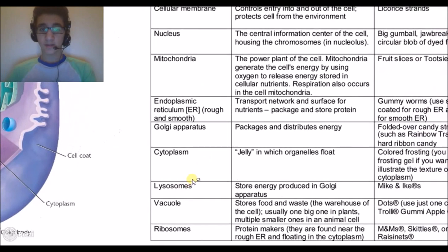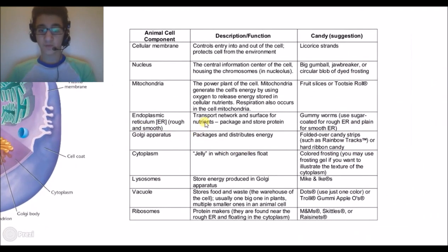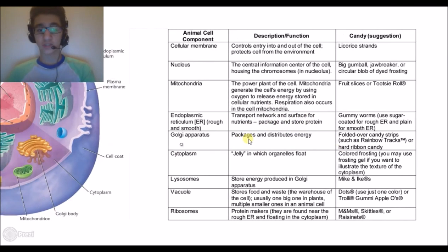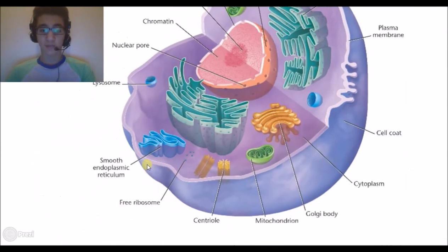The endoplasmic reticulum, the smooth and the rough, is a transport network and surface for nutrients, packages and stores protein. The rough endoplasmic reticulum has ribosomes, that's why it's called the rough endoplasmic, but the smooth endoplasmic reticulum does not have ribosomes so it is smooth.